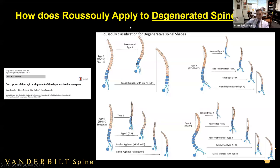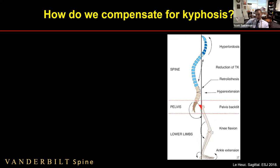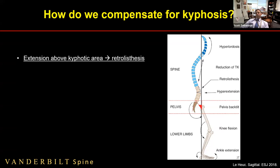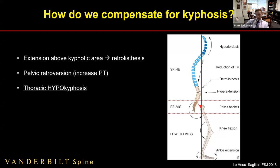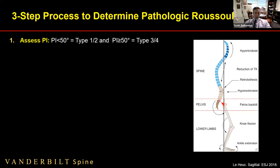How do the Roussely types apply to degenerative spine? I put this complex slide up at Vanderbilt and saw eyes glaze over, but there are really a couple simple principles. First, look at your PI: in a normal spine we use sacral slope, but in a degenerated spine PI is our only remnant of the original type. PI less than 50 suggests Type 1 or 2; PI greater than 50 suggests Type 3 or 4. These aren't hard and fast, but they're good general rules.